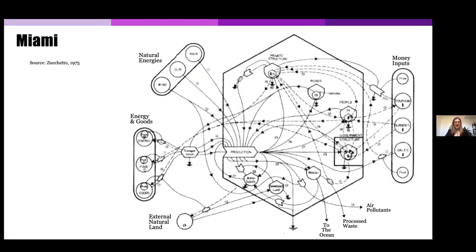Let me share some urban metabolism diagrams and studies. Starting with Miami — closer to where you are — some historical images, and also an attempt by my students to do urban metabolism diagrams for cities they were either interested in, born in, or would like to retire in. This Miami diagram was published in the 1970s. You can see they've plotted natural energies like rain, sun, and wind, some energy and goods inputs, money inputs tracking monetary flows, and outputs — showing the application of urban metabolism for Miami.